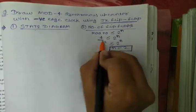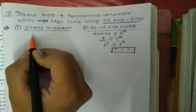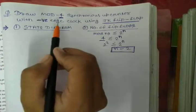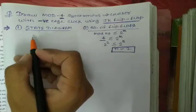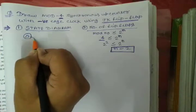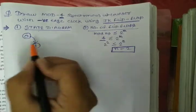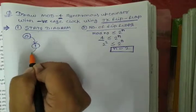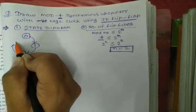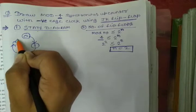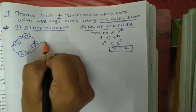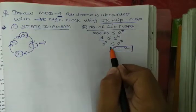Now we know the mod number, so the state diagram can be constructed. Here the mod number is 4, so we will have 0 to 3 numbers. As it is an up counter, the values will keep on increasing: 0, 1, 2, and then 3, and then move back to 0. In this way it will repeat.